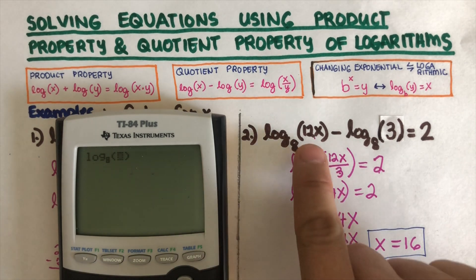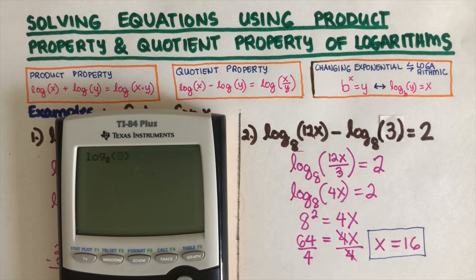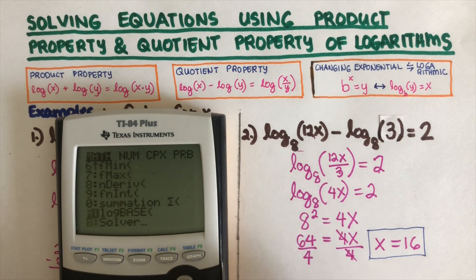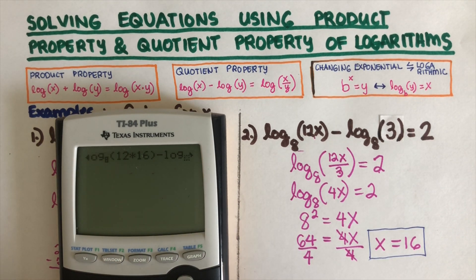The base that we have there is 8, and then that's 12 times 16, so 12 times 16. Then it's a minus, and then the base again is 8 and the argument is 3. When I hit equals it should be equal to 2. Let's see if they would match up, and the answer right here is a 2, so our x is 16.